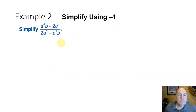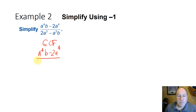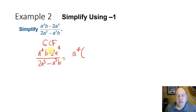Let's look at simplifying another rational expression: a to the fourth times b minus 2a to the fourth, divided by 2a to the third minus a to the third b. We factor using the greatest common factor. In the numerator, both terms share a to the fourth; in the denominator, both share a to the third. Factoring out a to the fourth from the numerator leaves (b minus 2), and factoring out a to the third from the denominator leaves (2 minus b).